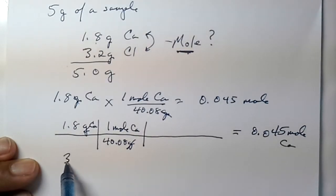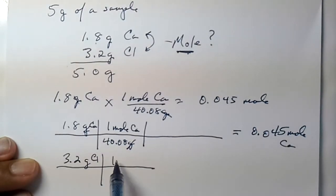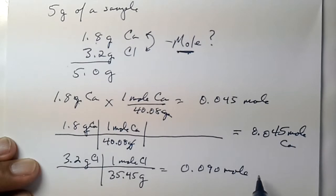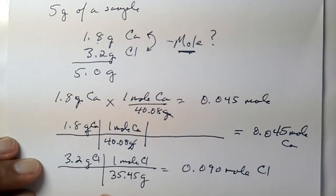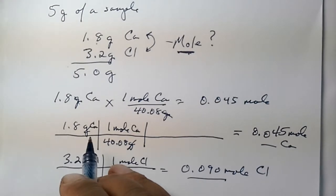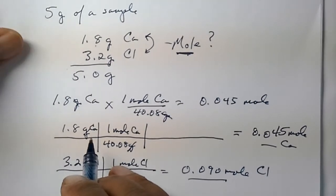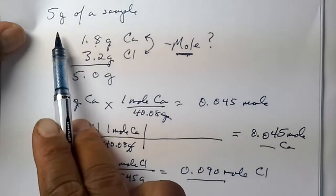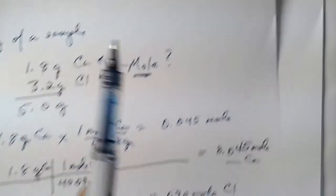We do the chloride in the same manner: 3.2 grams of chloride, one mole of chloride equals 35.45 grams, and that's equivalent to 0.90 moles of chloride. Now we have our ability to determine the ratio of our calcium and our chloride in this 5 gram sample.